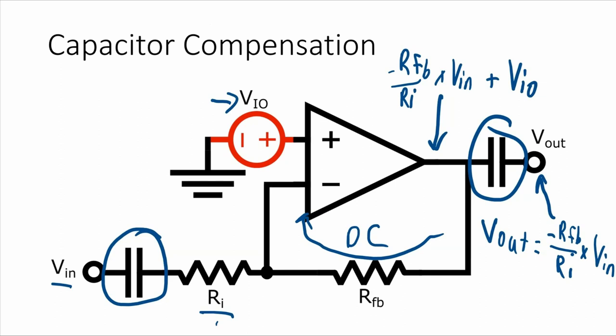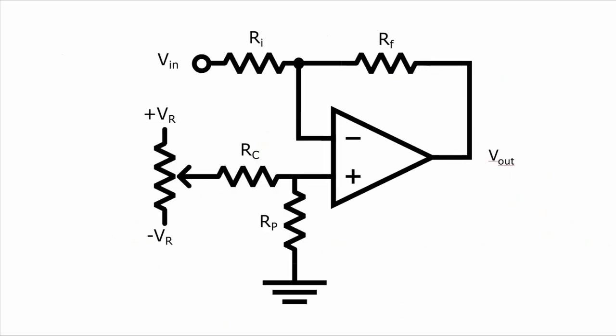Now this is a fairly easy solution, but it's not going to work in every application, in particular ones where you can't AC couple the input or the output. You can also build external compensation circuitry, and this time, in this one, we're looking at the compensation circuit for an inverting amplifier. And the way it works is like this.